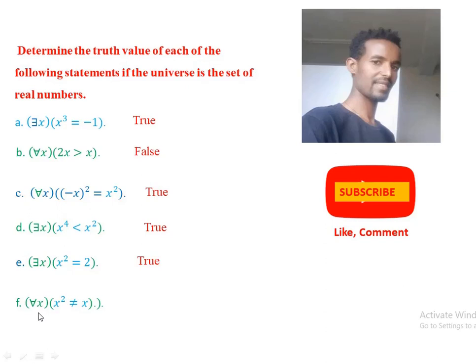Statement (f): for every x, x squared is different from x. For example, if we take x = 1, then 1² = 1, and 1 is different from 1, which is false. Or if we take x = 0, then 0² = 0, and 0 is different from 0, which is also false. As a result, for every x, x squared is different from x is false.